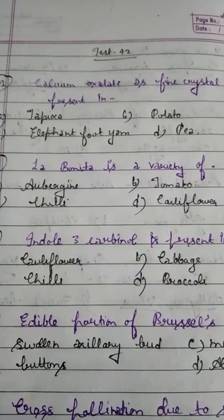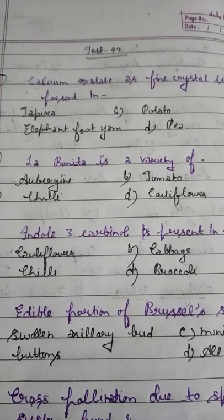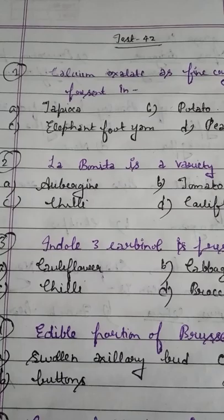Good morning students. I am Mahing Tiwari. Today we will do test number 42 of the general agriculture series. Please write down the numbers 1 to 10 on your sheet of paper and at the end evaluate your correct responses. Let's start.